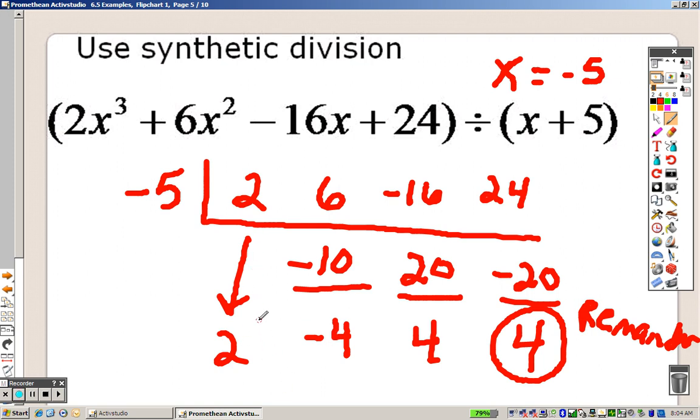It was x cubed, so now this is 2x squared. This is minus 4x. This is plus 4, and there is your remainder. So, remember that's what we have here. We have 2, negative 4, 4.